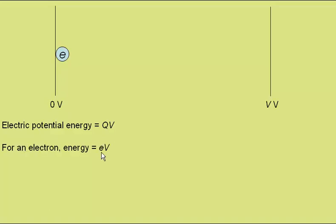The charge on the electron is given the symbol little e, so for an electron its potential energy is eV.